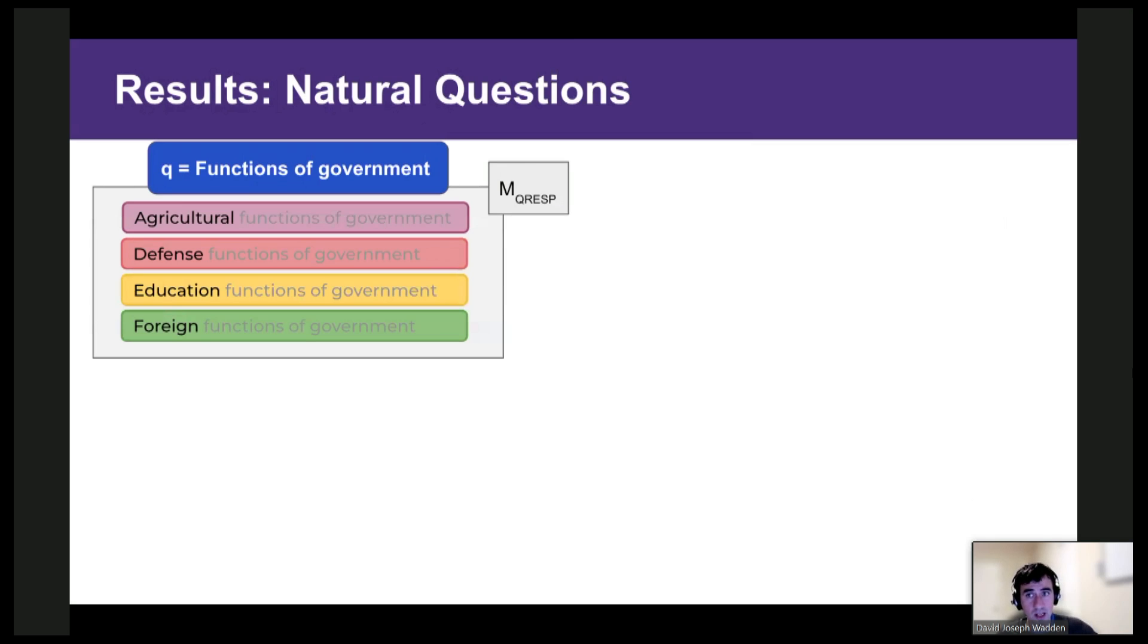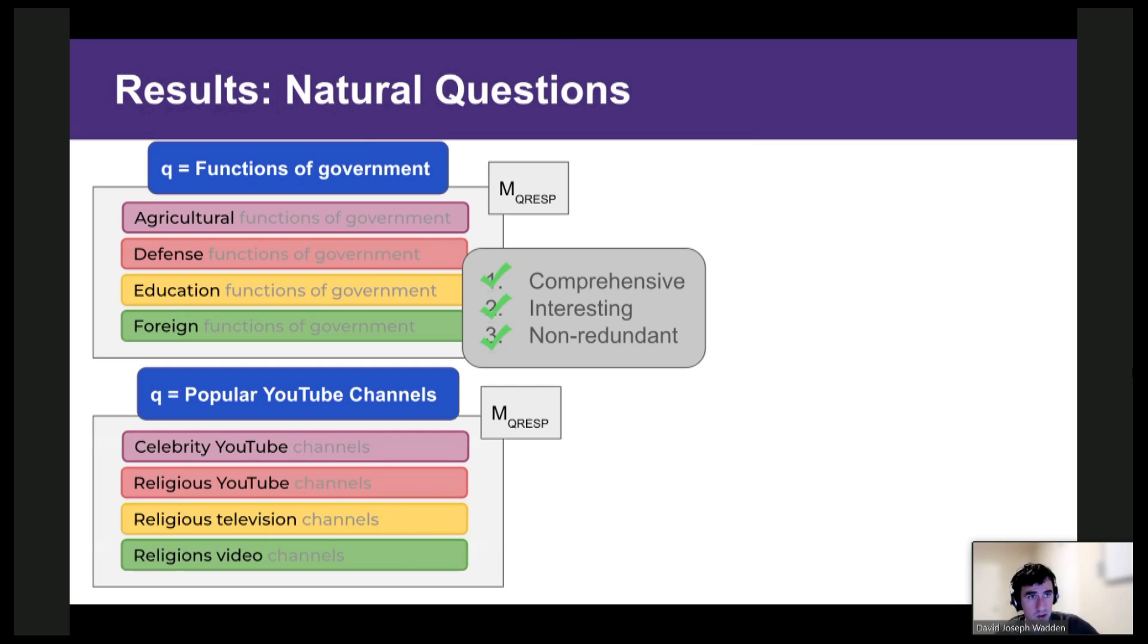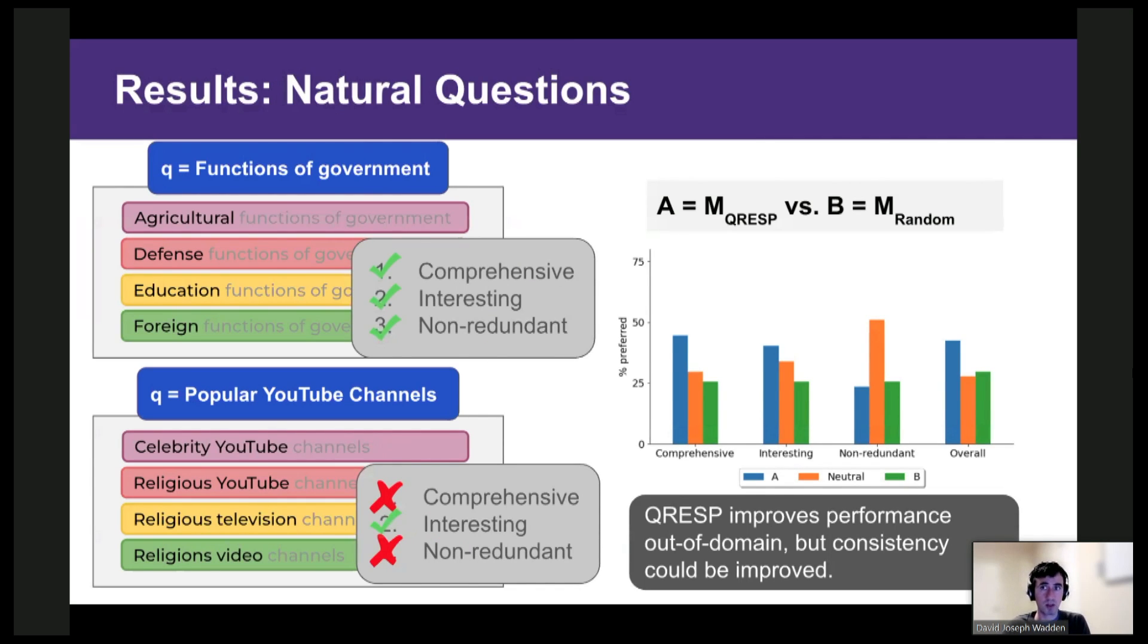Finally, we'll close by looking at some QRESP model predictions on out-of-domain queries. So here are model refinements for the query functions of government, and these look pretty good. They include important subcategories like education and defense. But there's still some room for improvement. On this query for popular YouTube channels, we see that the model kind of repeats itself, mentioning three different versions of religious channels. And the overall results comparing QRESP with random tell a similar story. QRESP is still helpful, but not with the same consistency as in domain.